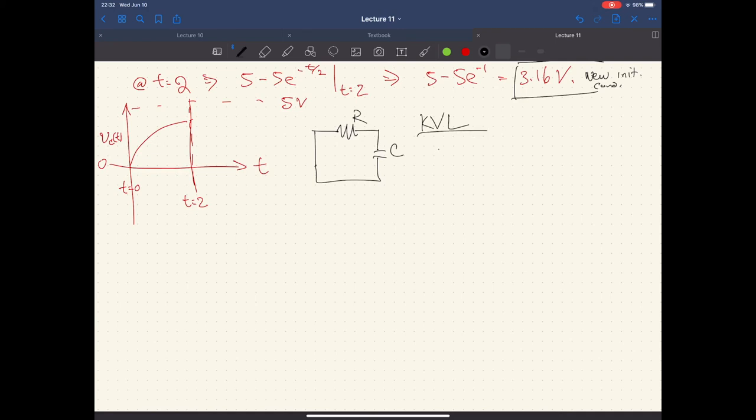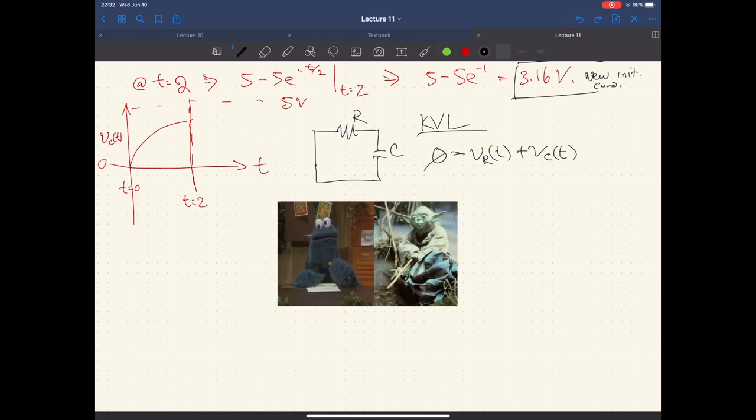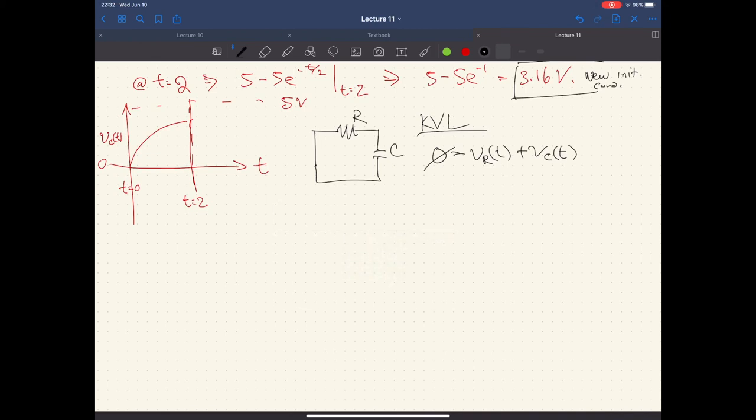So when we write the new KVL equation, we end up with zero is equal to V_R(t) plus V_C(t). Why zero? Because we have nothing forcing our system anymore. The force is gone. There's, the entire galaxy is in disarray. There's nothing left in the force anymore. All right. It's dead.